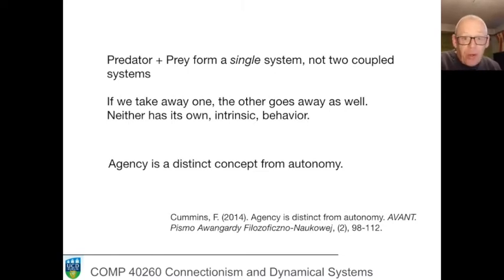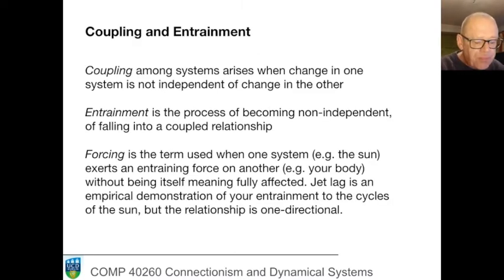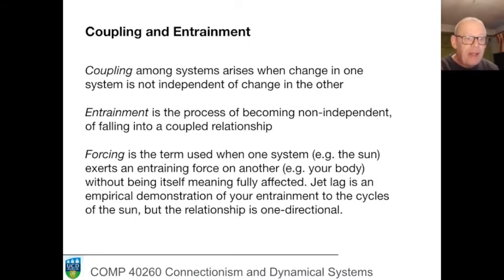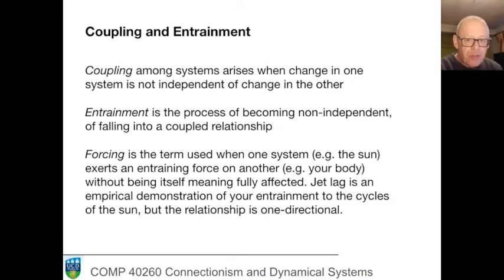What about those cases where we have autonomous systems that do interact? These are really important. Dynamical systems which interact with each other will influence each other and become relatively non-independent, and we speak of relationships of coupling or entrainment — I'm not going to really distinguish between the two terms.